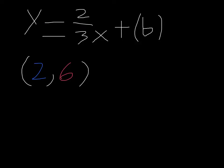Now that we know our slope, we plug it into the equation. We should have y equals 2 thirds x plus b. Now, we need to take one of the points and plug the points into the equation.